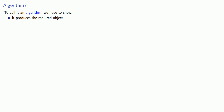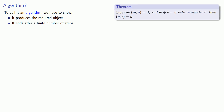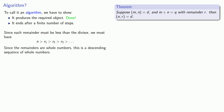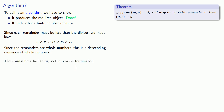To properly call it an algorithm, we have to show that it produces the required object and ends after a finite number of steps. Our theorem that the greatest common divisor of two numbers equals the greatest common divisor of the smaller with the remainder shows the algorithm will produce the correct GCD, as long as it ends. Since each remainder must be less than the divisor, we have a strictly descending sequence of whole numbers, so there must be a last term, the process terminates, and we properly have an algorithm.